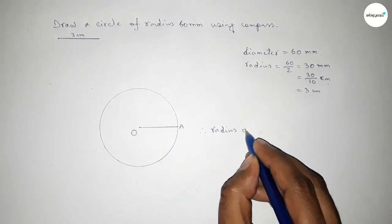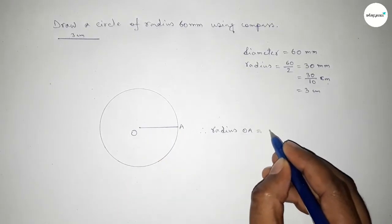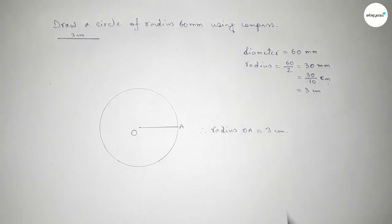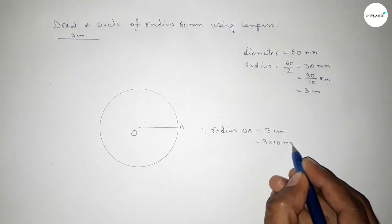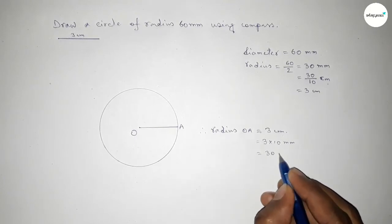Now converting into millimeters. So multiplying by 10, this is 30 millimeters.